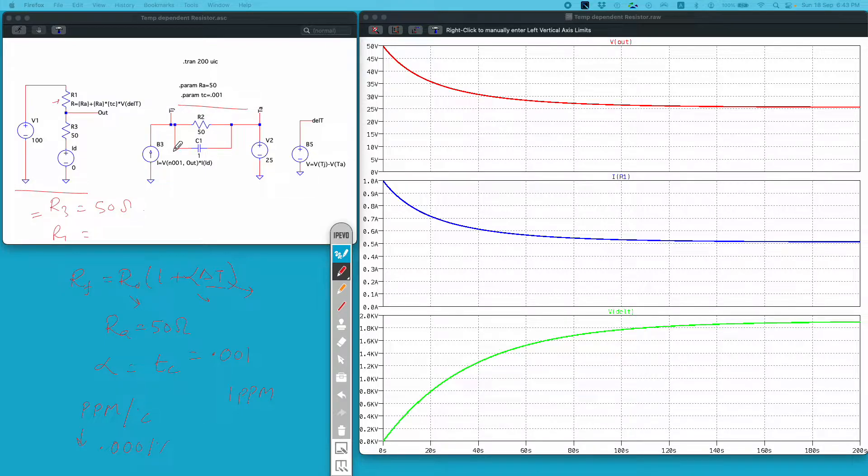This R2 and C1 here model the thermal time constant of this circuit. Now again I will repeat, this thermal time constant could be particular to this resistor. It could be modeled to include the effect of the PCB. It could be modeled to include the effect of the heat sink and so on.